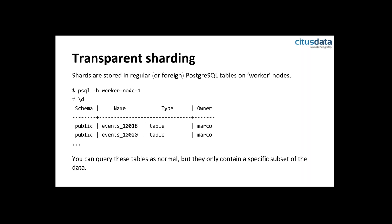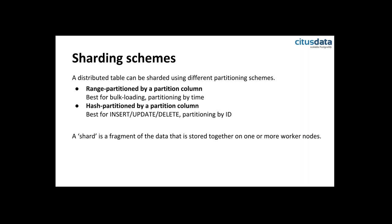You will also see events_10018 on multiple worker nodes, because there's going to be replication. A question is: what is actually stored in those tables? How do we decide what gets stored in a certain shard? When we create a distributed table, we need to decide on a particular partitioning scheme.